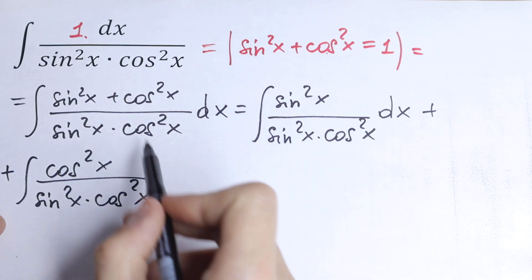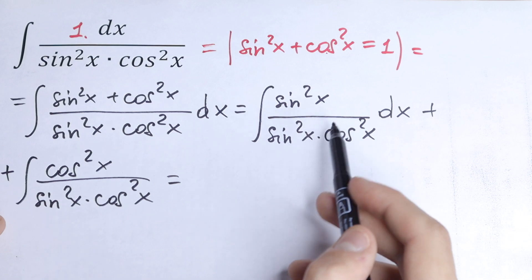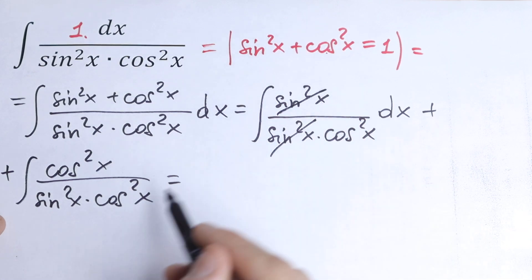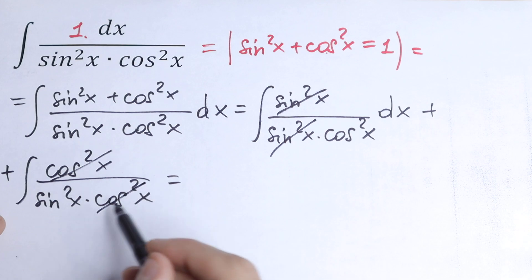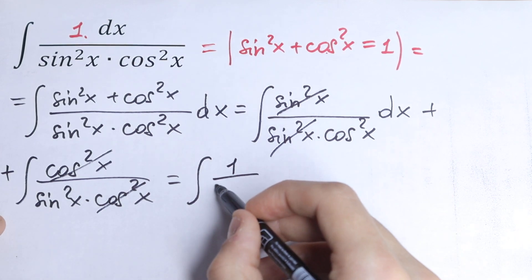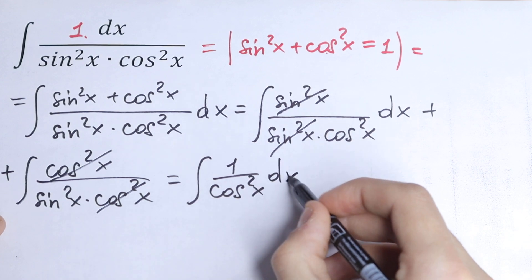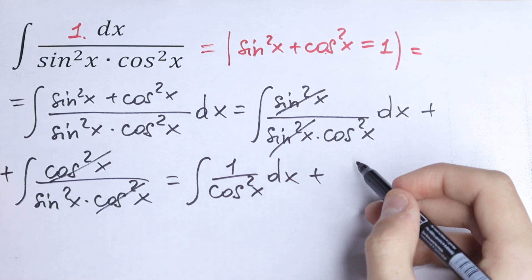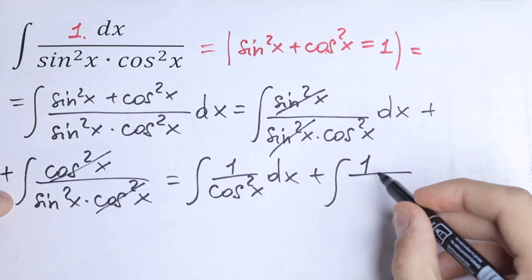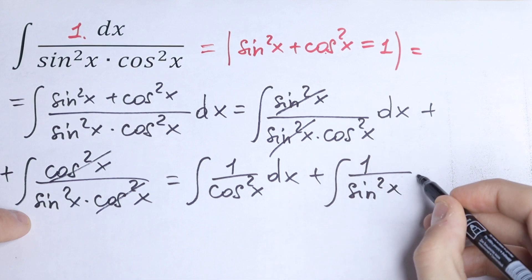Nothing changes — if we add these we get the same as before. But take a look: we can cancel the sine squared x in the first integral, and cancel the cosine squared x in the second. So we get the integral of 1 over cosine squared x dx, plus the integral of 1 over sine squared x dx.